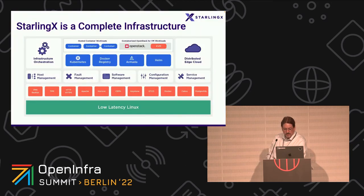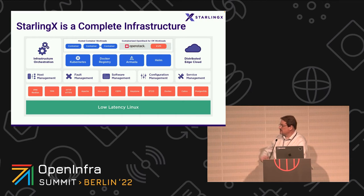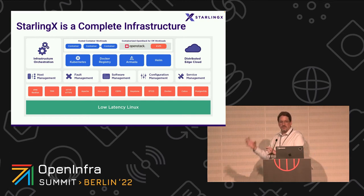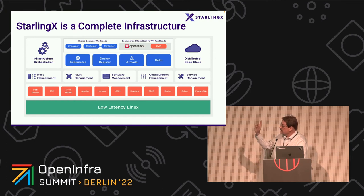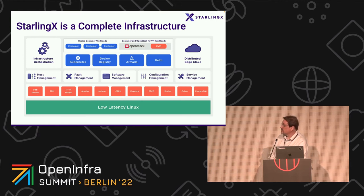Looking at the architecture components, low-latency Linux: the current project is a CentOS base with a Yocto real-time kernel merged into a custom CentOS build. When you deploy StarlingX it comes with the Linux that is the host operating system — you don't deploy a host OS and install StarlingX on top; the Linux is a key component of the performance. OpenStack Horizon and other OpenStack-family components help manage this architecture. Kubernetes is there, and OpenStack as containerized OpenStack for VM workloads means that if you want to deploy OpenStack in StarlingX it's deployed as containers within the Kubernetes architecture.